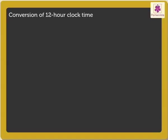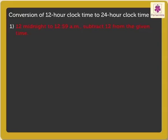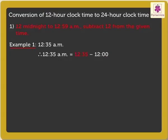Let me show you how to convert the 12-Hour Clock time to 24-Hour Clock time. Depending on the time intervals, the conversions are carried out as follows. For the time from 12 midnight to 12:59 AM, subtract 12 from the given time. For example, if the given time is 12:35 AM, then subtract 12 from 12:35, which gives 0:35. We write it as 00:35H and read it as 0035 hours.